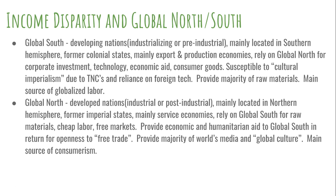Commonly referred to as the first world and the third world, the relationship between the two is pretty complex. The global south represents developing nations, meaning nations that are industrializing or are pre-industrial. For the most part, the majority of them are located in the southern hemisphere. They are former colonial states. They have mainly export and production economies, meaning they provide the majority of raw materials to the industrialized world. They also rely on the global north for corporate investment, technology, economic aid, and cheap consumer goods.